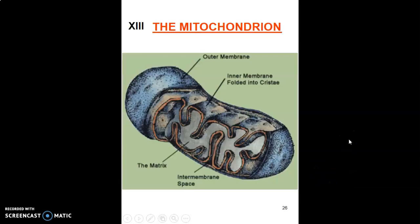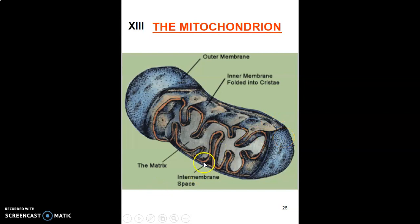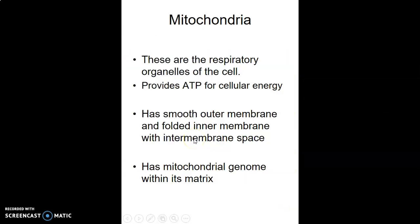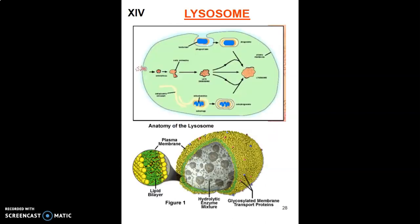The mitochondrion contains an outer membrane and an inner membrane thrown into folds called cristae, with an intermembrane space between them, and a matrix inside. The mitochondria is the powerhouse of the cell — it produces ATP, giving the cell the energy it requires. The matrix contains DNA, which is the mitochondrial genome.